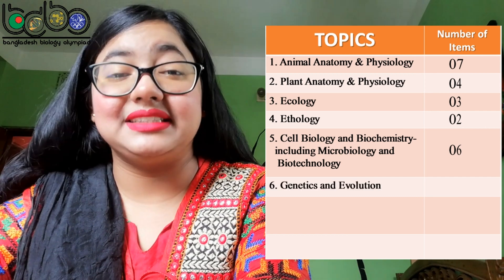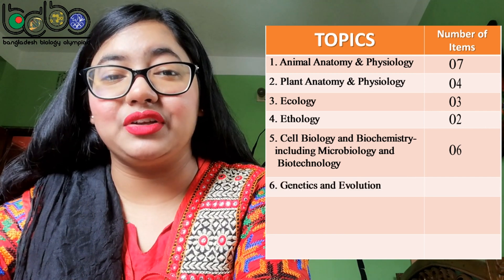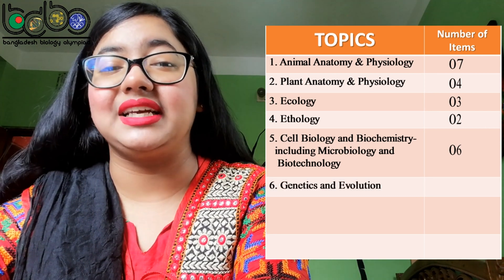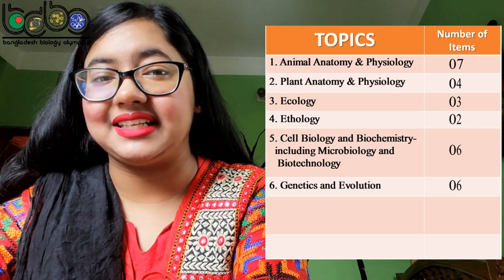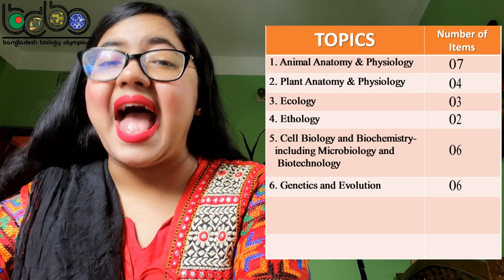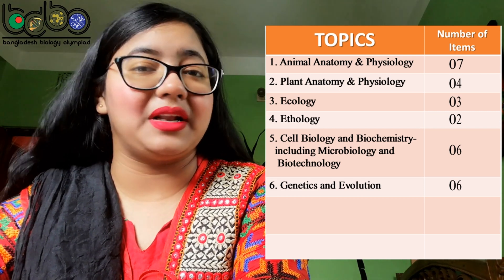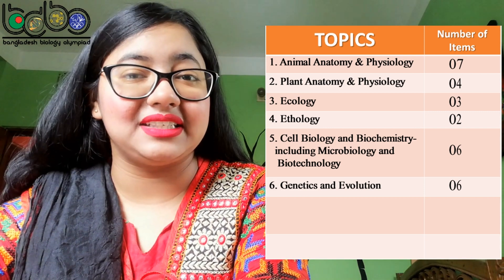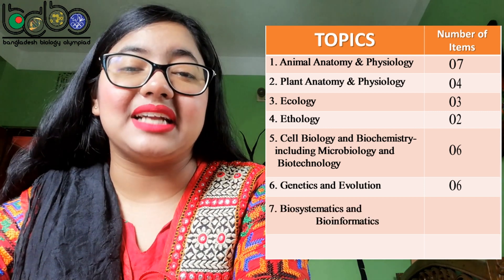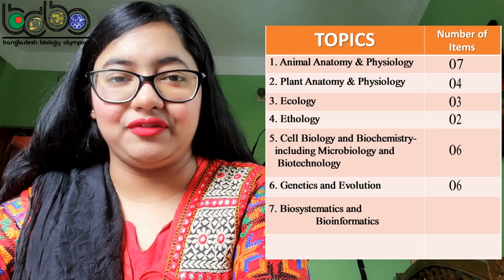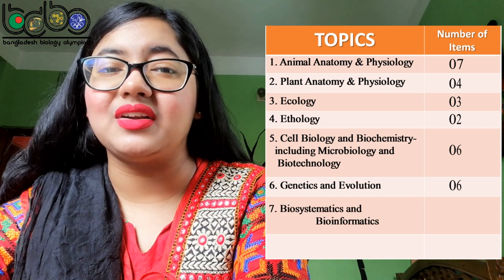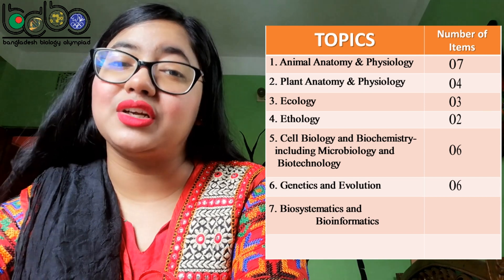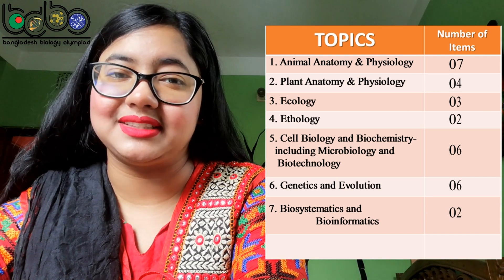Cell biology and biochemistry — which will also include microbiology and biotechnology — will contain about six items. Genetics and evolution will contain about six items. And last but not least, biosystematics and bioinformatics will contain about two items.